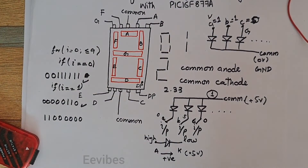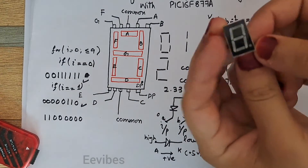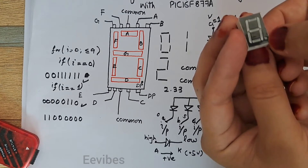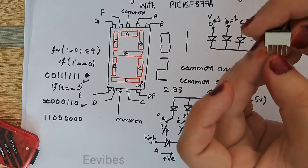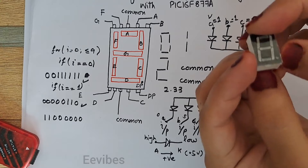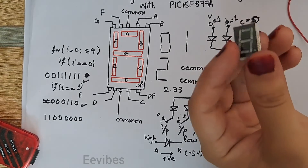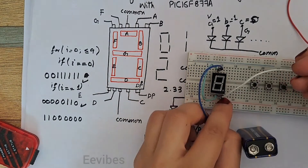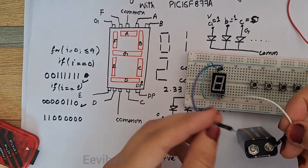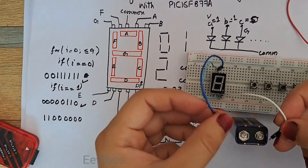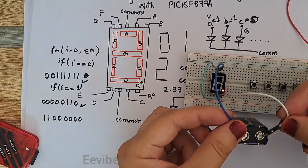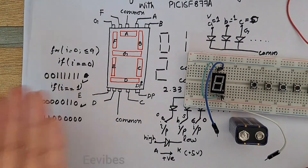Before showing the output, let's check whether this is a common anode or common cathode display. I preferably use the decimal point LED to test: I ground the common pin and provide high voltage at the decimal point using a simple battery. If the LED turns on, it confirms the type — and we can see it turns on, confirming this is a common cathode type seven segment display.